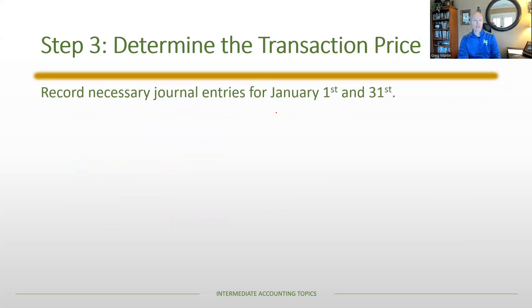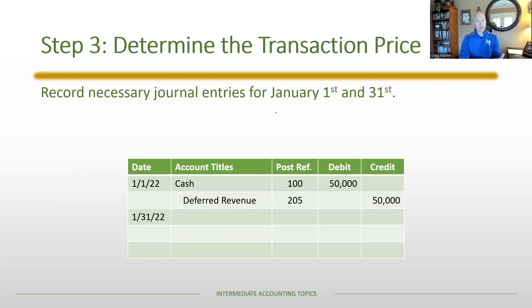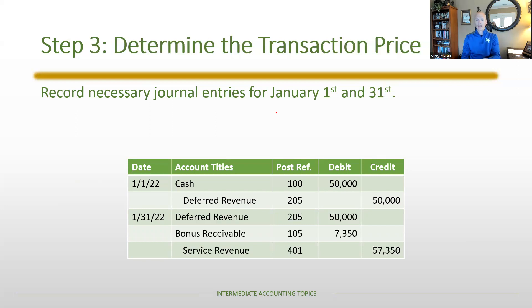On January 1st, the full $50,000 payment received is deferred revenue since no work has been done yet. Throughout January, the revenue is earned by providing services. On January 31st, services are completed. At that point, we also have an expectation of earning a bonus, and since we've transferred the good or service, we can recognize revenue for that bonus. We'll use the expected value of $7,350 to illustrate adjustments in both directions.